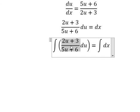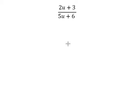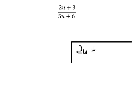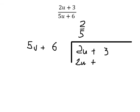Now, I will do long division of this one. So I will put 2u plus 3 in here and 5u plus 6. So we have number 2. This is about number 5. So we need to multiply by 2 over 5. 2 over 5 multiplied by 2u plus 3. So we have 2u plus 12 over 5. We minus the two equations.